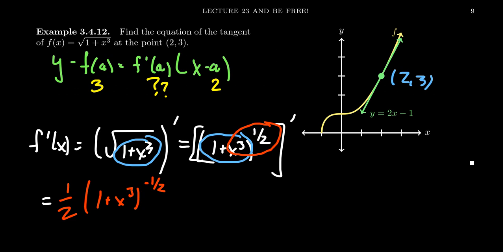Notice by the usual power rule, the power comes out in front as a coefficient, and then you lower the power by 1. 1/2 minus 1 is negative 1/2. But we also have to take the derivative of the inner function, the so-called inner derivative. You have to take the derivative of 1 plus x cubed. So considering this, the derivative of 1 plus x cubed: the derivative of 1 is 0, and the derivative of x cubed is 3x squared. And then the denominator will look like 2 times the square root of 1 plus x cubed. This is our derivative.